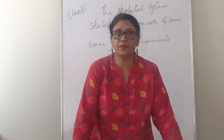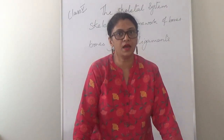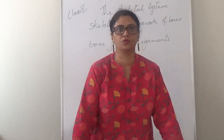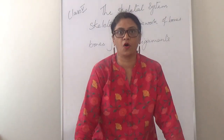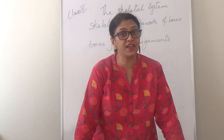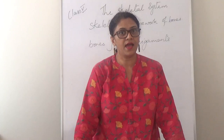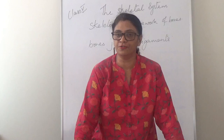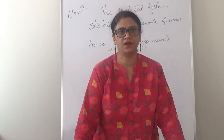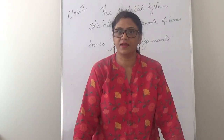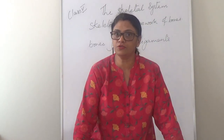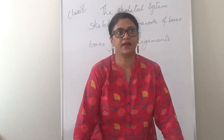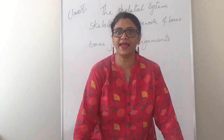Do you know how many bones we have in our body? An adult has 206 bones. When a baby is born, a baby has 300 bones. As the baby grows to an adult, the number of bones reduces to 206. There are some bones that fuse together to form longer bones — that's how it goes from 300 to 206.